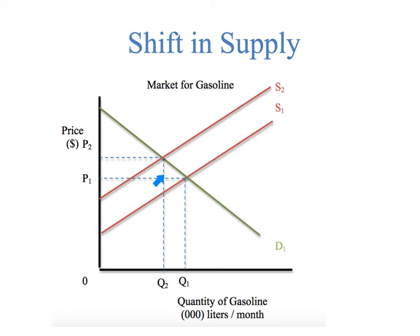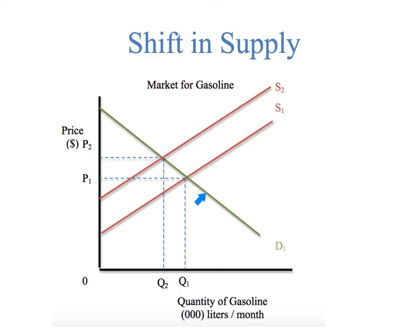After the hurricane, the price-quantity combination of P2, Q2 will be the new equilibrium as a result of the drop in supply in the market for gasoline. So when either the demand curve or the supply curve shifts, a new market equilibrium price-quantity combination will be established — also referred to as a market clearing price. If supply shifts inward, the market clearing price goes up. If the cost of factors of production dropped and the supply curve shifted outward, there would be a drop in price. I hope you found this video helpful.